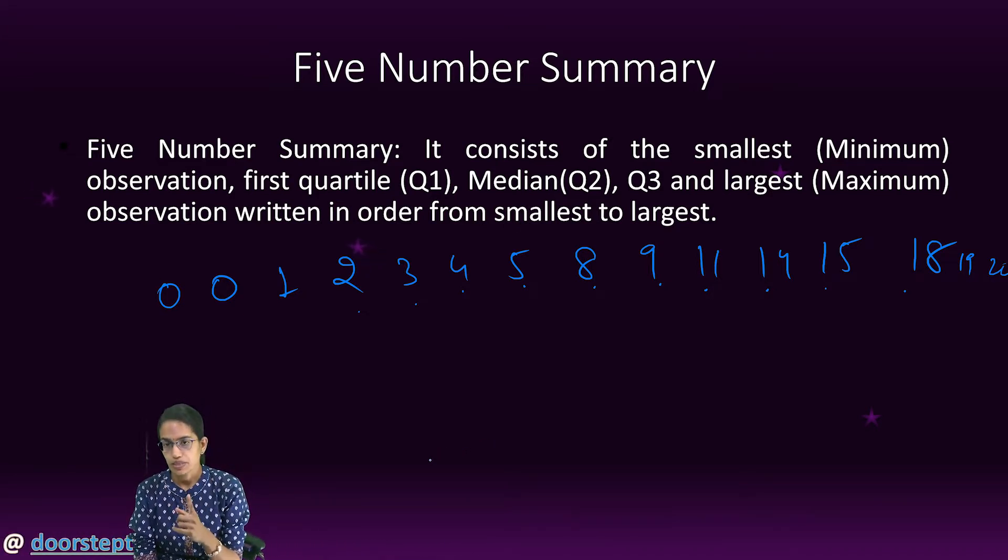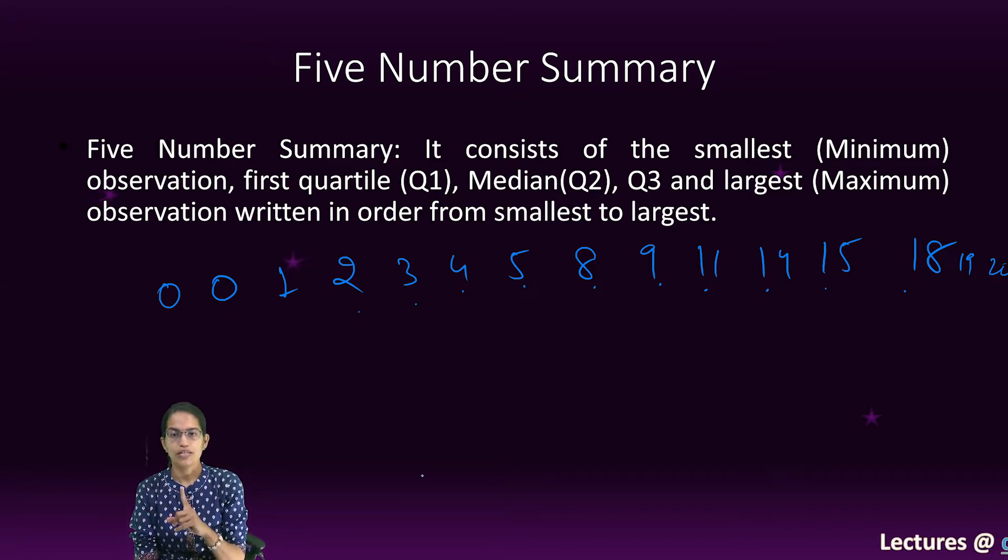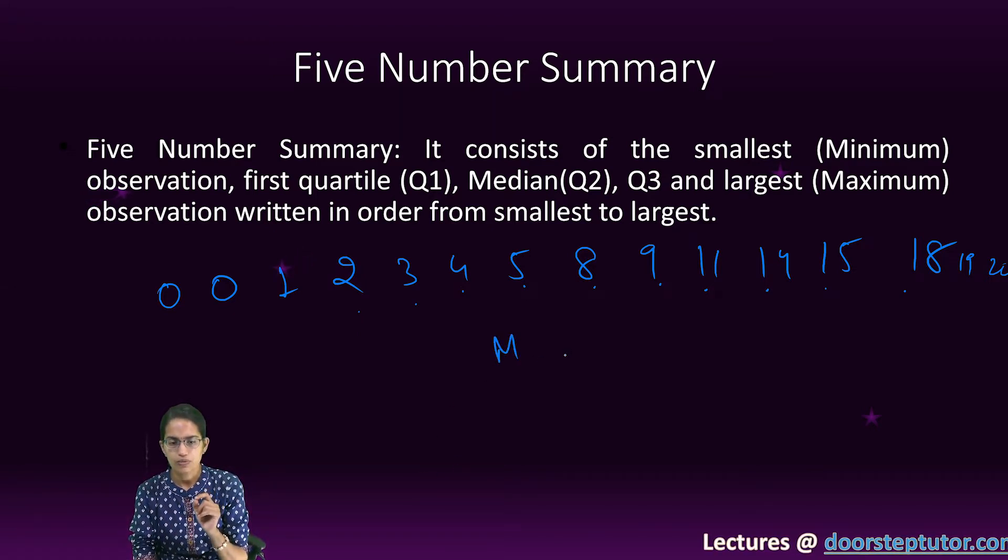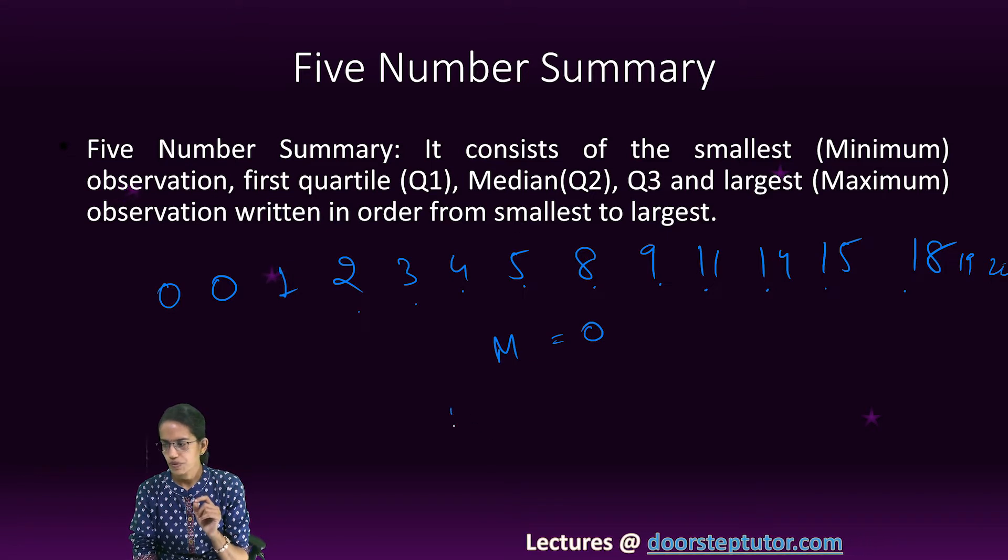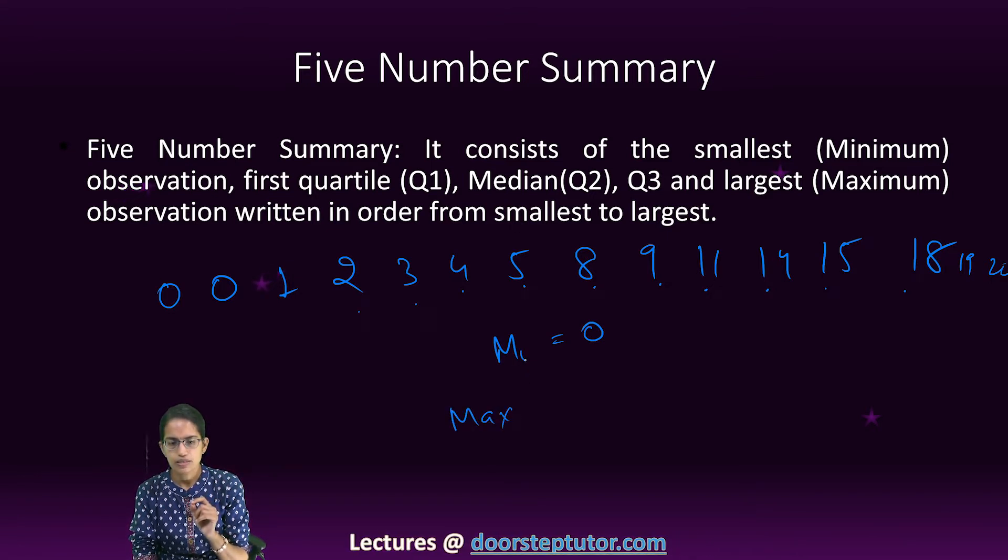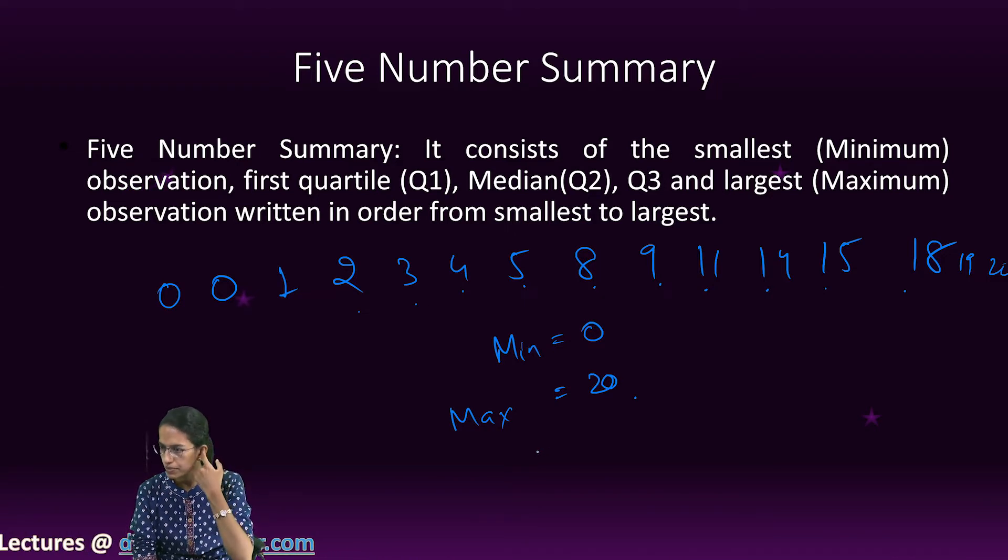What is a five number summary? Based on the five number summary, I can have a box plot diagram. But what are the five numbers? In the variability, we have understood we find out the minimum value. So minimum here is 0. The maximum here is 20. So we calculated the minimum, we calculated the maximum.